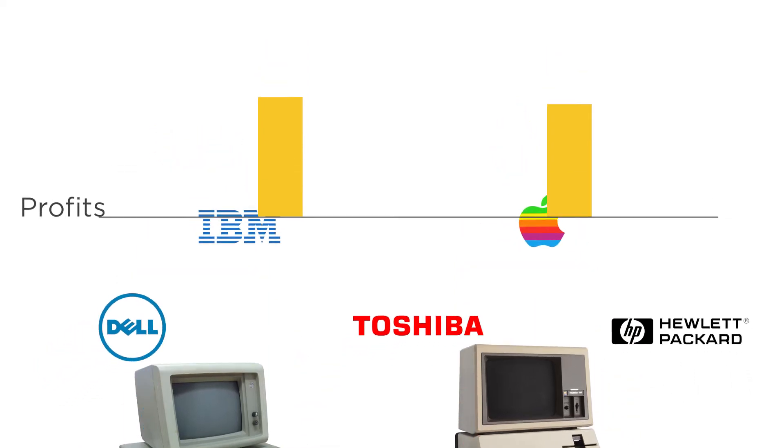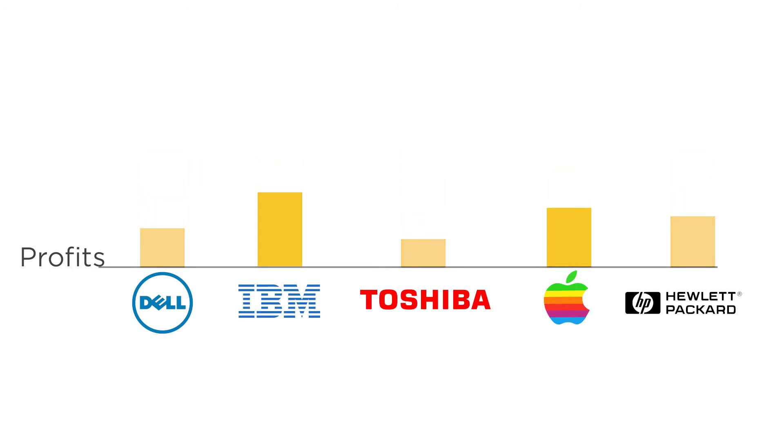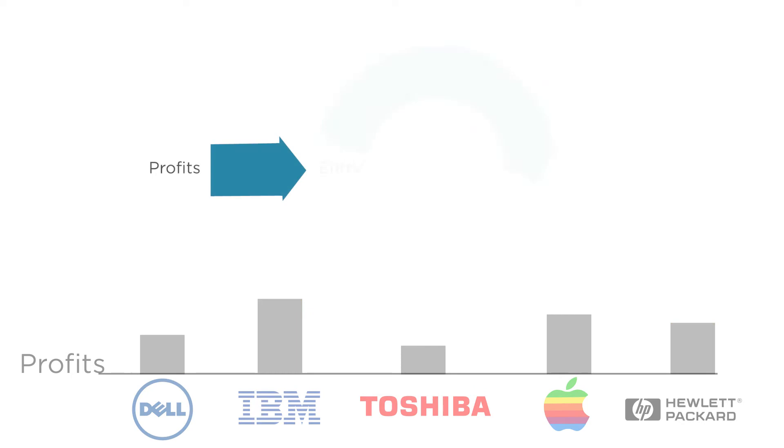And what happens as each new firm enters the market? The price of computers gets driven lower, and there are less profits to be made. So if firms see a chance for profits, they enter the market, and this drives those profits down. So long as there's a chance for making profits, more firms will enter, making profits lower still. When does this cycle stop? It stops when there are no more profits to be made.